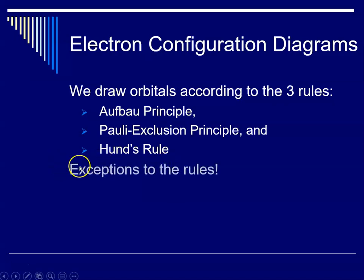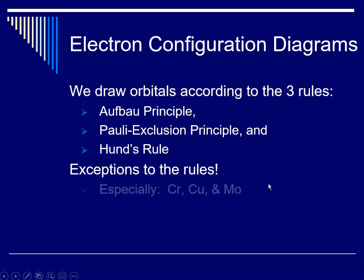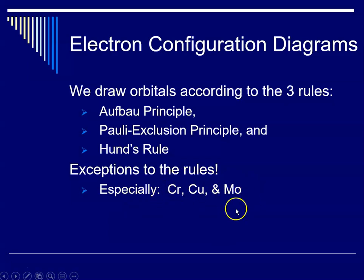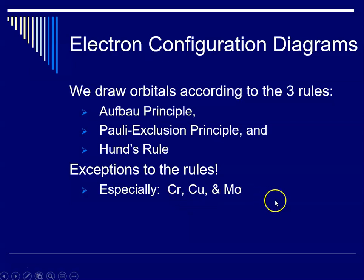There are exceptions to these rules, and I will do a separate tutorial for that. Generally, those exceptions occur at specific locations in the periodic table — the ones we'll talk about are chromium, copper, and molybdenum.